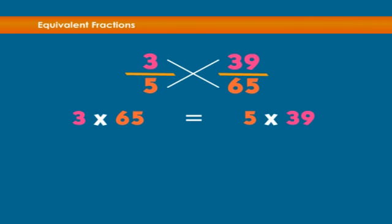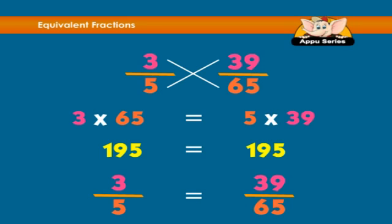Therefore, one-ninety-five equals one-ninety-five. Three-fifths is equal to thirty-nine over sixty-five.